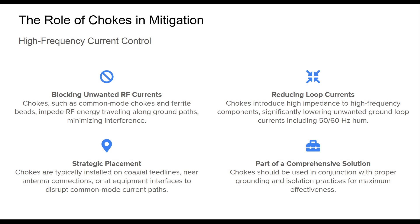Chokes are one of the most practical tools for mitigating ground loops in amateur radio setups. By presenting high impedance to unwanted high-frequency currents, they block RF energy that might otherwise circulate through unintended ground paths. This effectively reduces ground loop currents, including the characteristic 50 or 60 hertz hum that plagues many systems. Common mode chokes and ferrite beads are the most frequently used devices, often placed strategically on coaxial cables at antenna junctions or between equipment. Their role is not to replace grounding, but to complement it. When combined with proper grounding techniques, isolation transformers, and balanced cables, chokes become the cornerstone of an interference-free ham shack. Proper use of chokes enhances signal integrity and ensures that transmitted and received signals remain free of spurious noise. Understanding where and how to install them is essential knowledge for every serious ham radio operator.